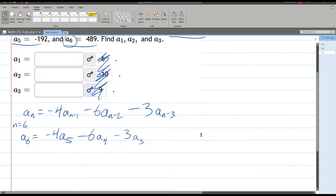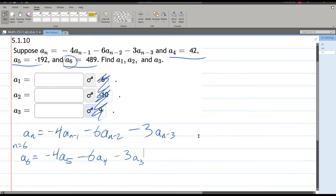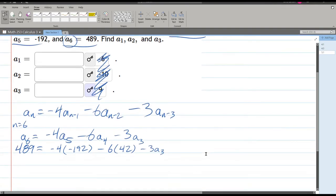So, I'll just get that back on the screen. So we got a6, 489, equals negative 4 times a5 is negative 192, minus 6 a4 is 42, minus 3 a3. All right, we can solve for a3.